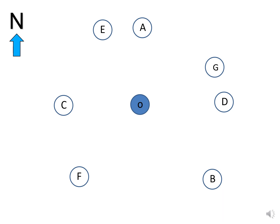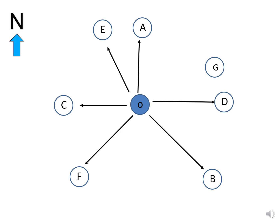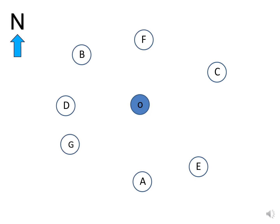Let us do an exercise on how to find directions of places on topographical maps from the observer's position. You are at the observer's position O. The compass direction of place A from O is north. The compass direction of B from O is south-east. Compass direction of C is west. Compass direction of D is east. Compass direction of E from O is north-west. Compass direction of F from O is south-west. And compass direction of G from O is north-east. Take some time and find out the direction of all places A to G from O.